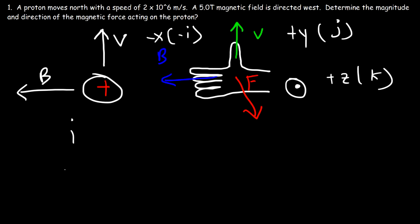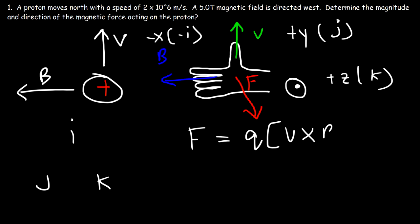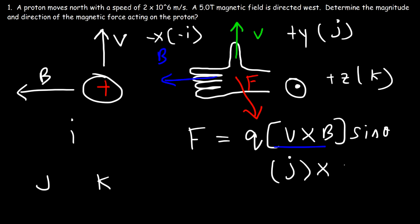Write the letters I, J, and K in order. The formula for magnetic force as a vector is F = Q times the cross product of V and B times sinθ. The velocity is in the J direction and the magnetic field is in the negative I direction. Our goal is to confirm that we get positive K, which is the positive Z direction.